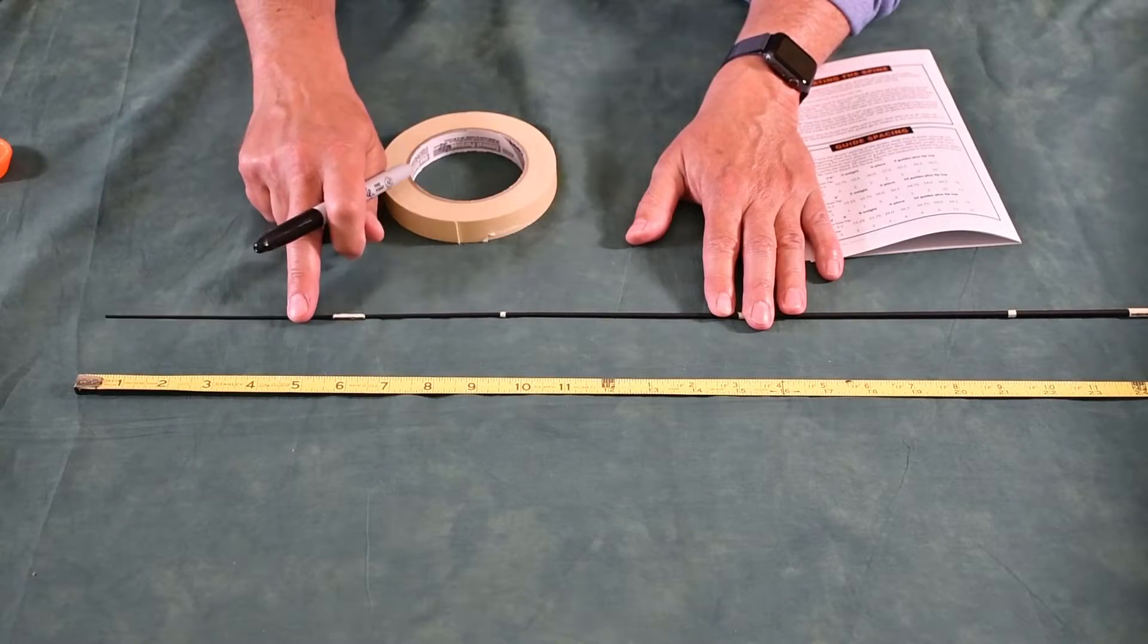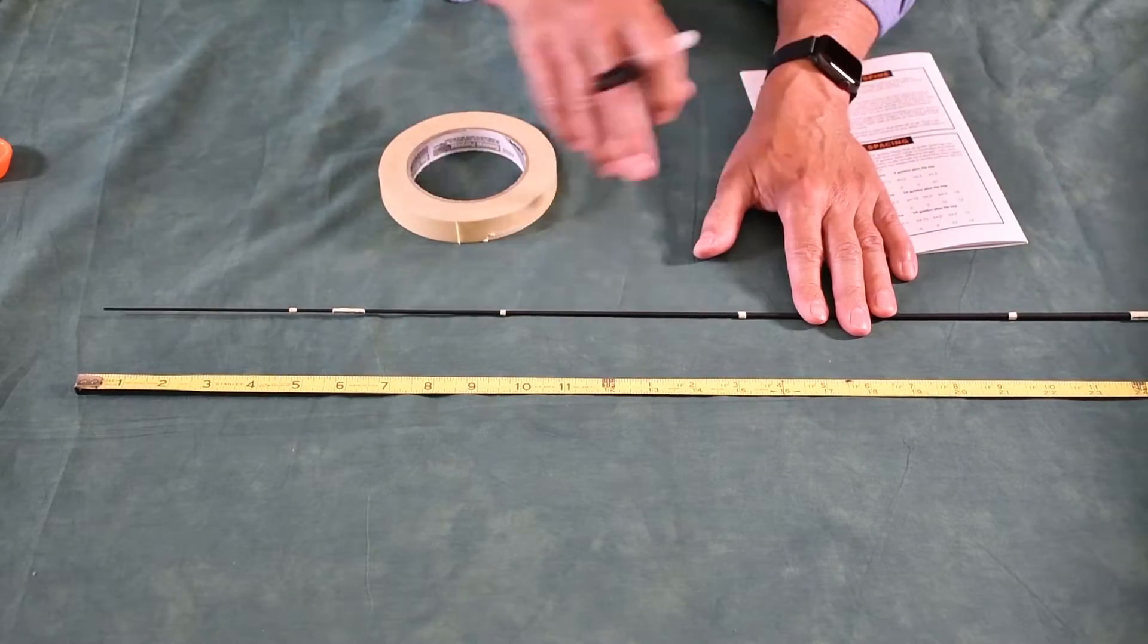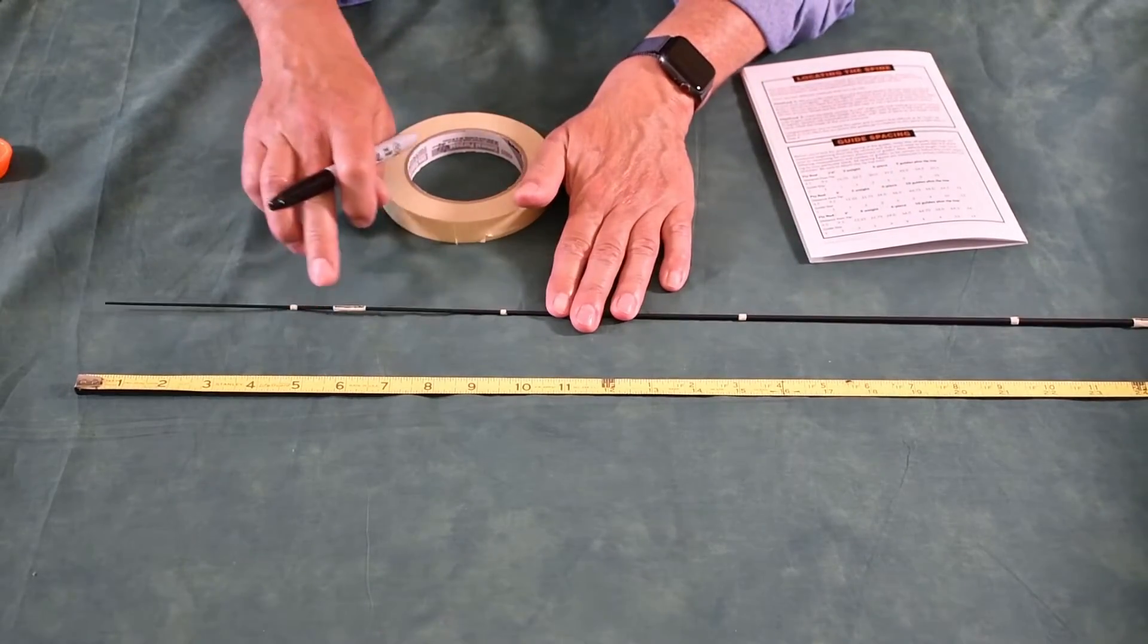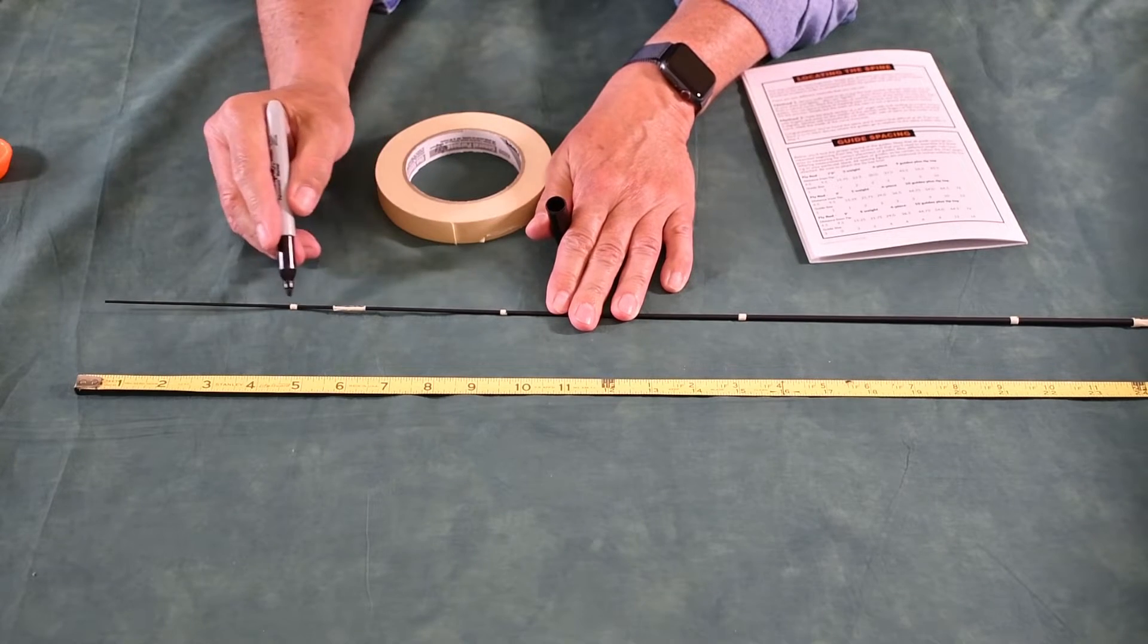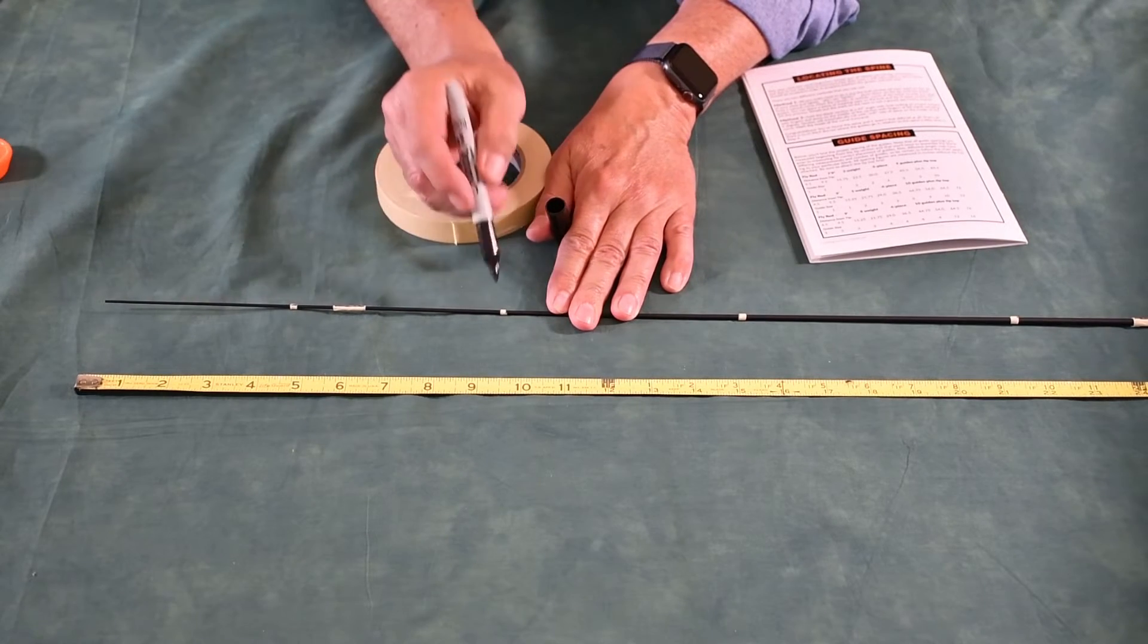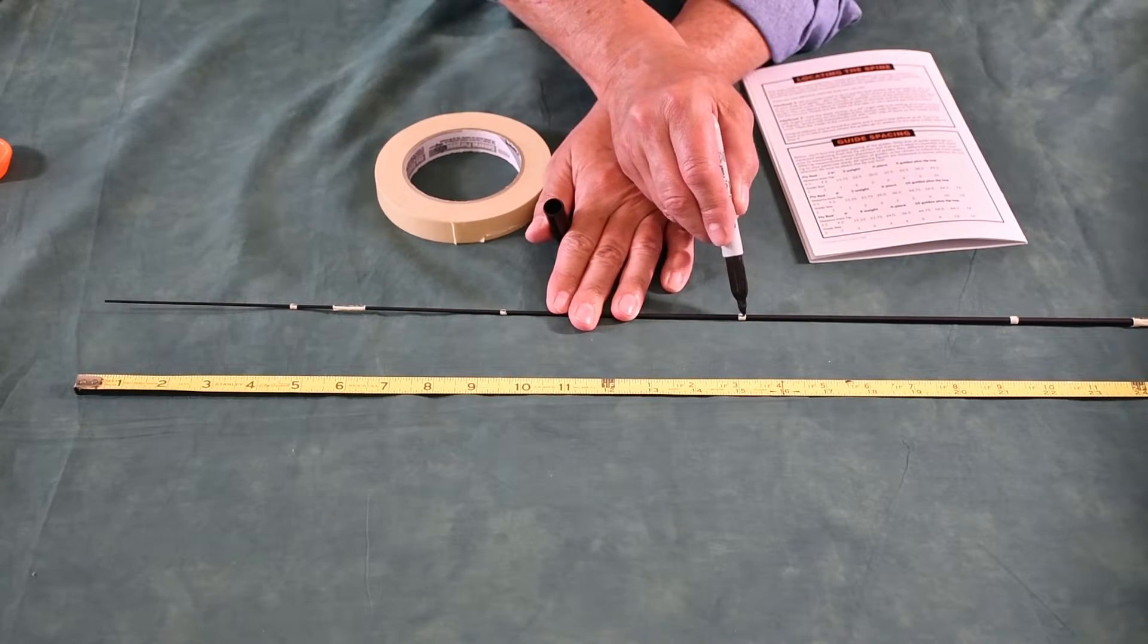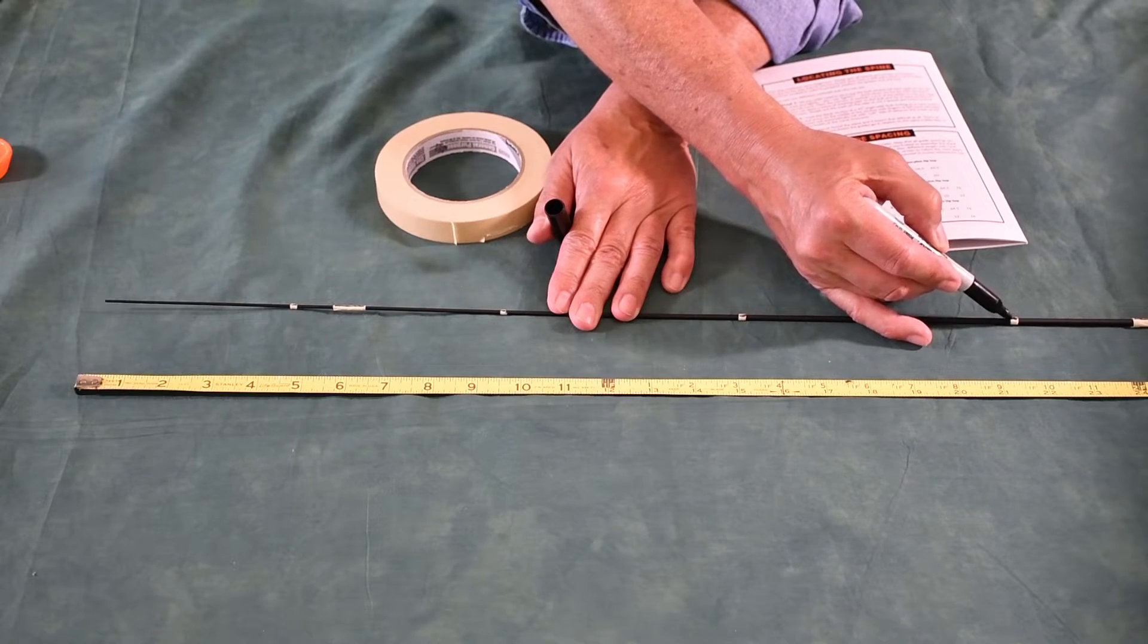Now that we've marked where each guide is going to go according to the spacing chart with a small piece of tape, we have to go back to that marking we made for the spine. You can see it right here. Let's mark on each of the guide spacings a mark that's straight with the spine so that we'll know where to put that guide, which direction facing.